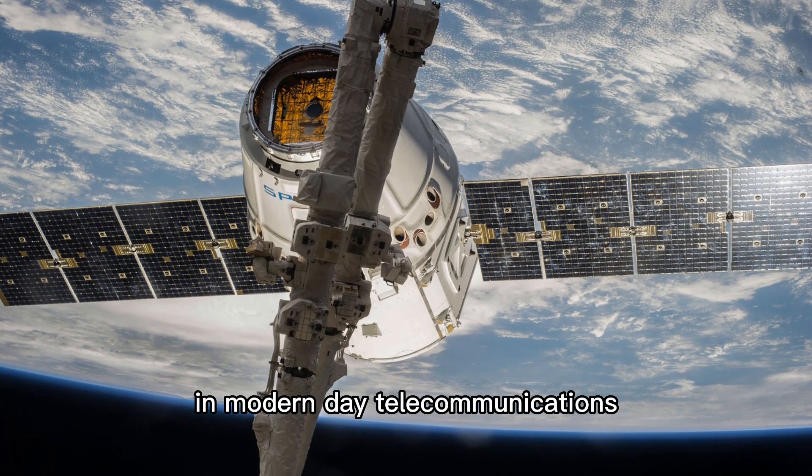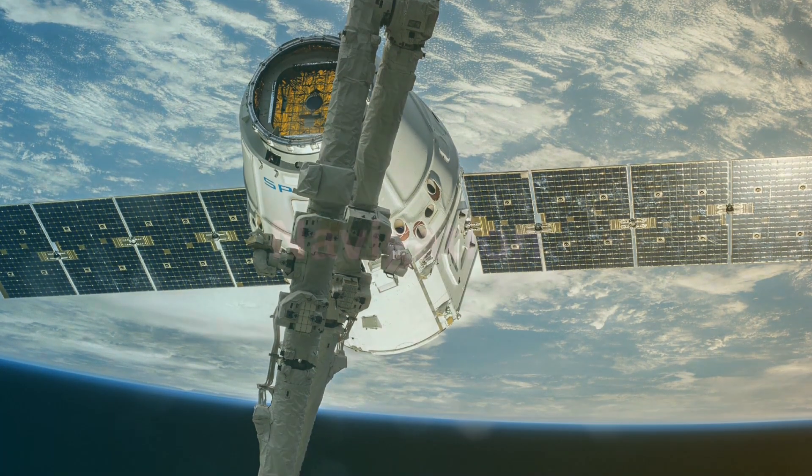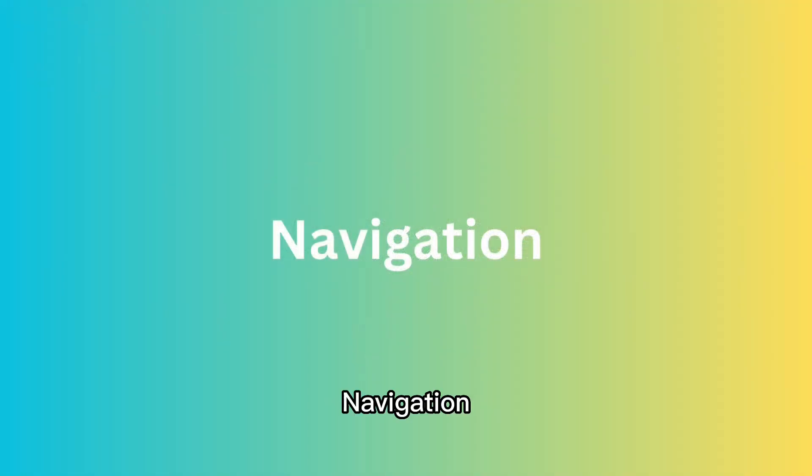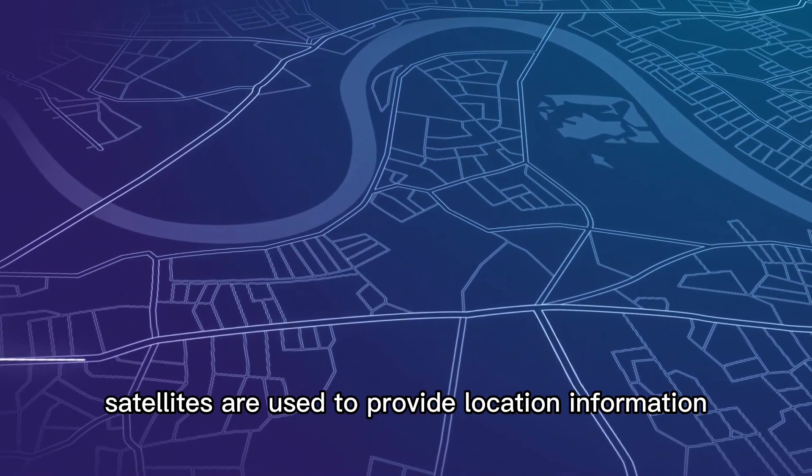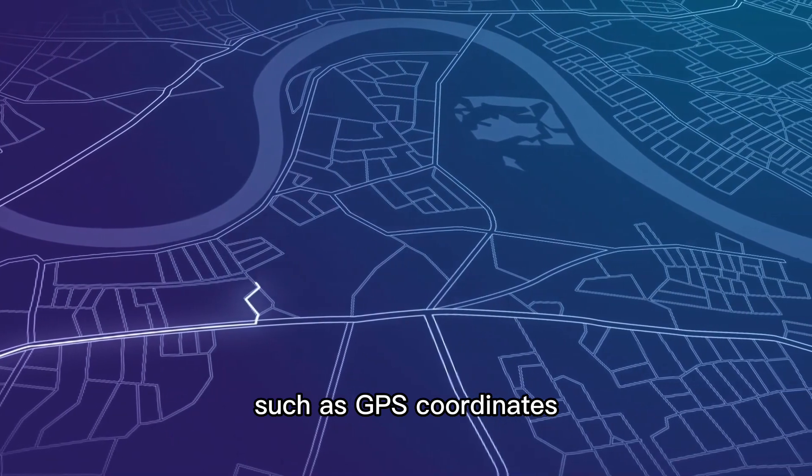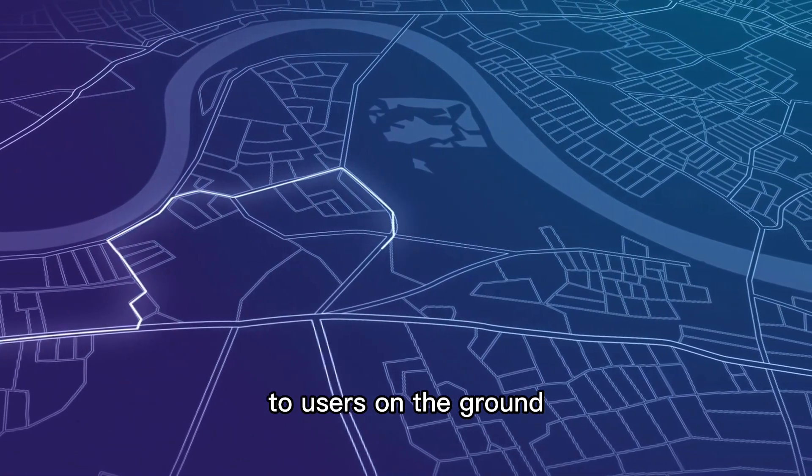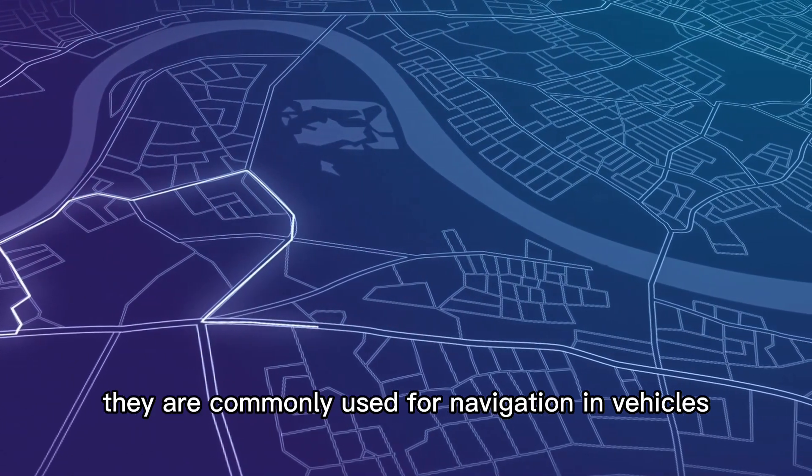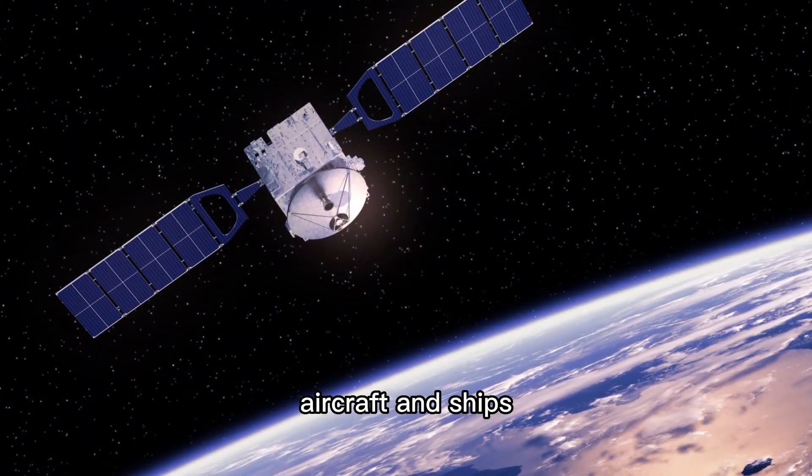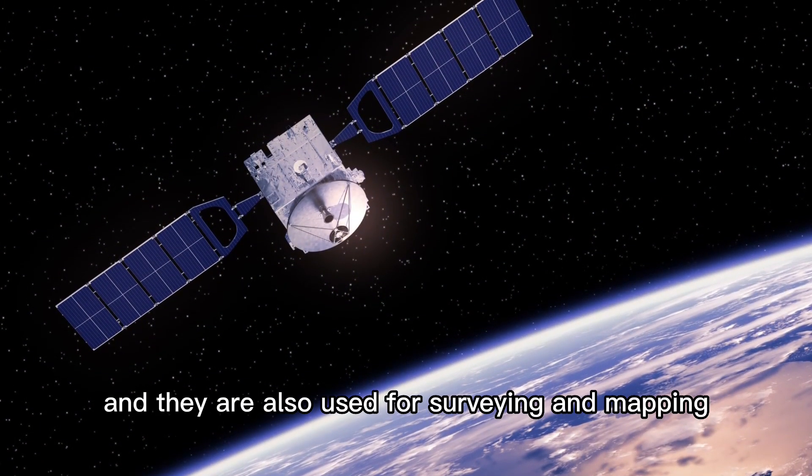Navigation satellites are used to provide location information, such as GPS coordinates, to users on the ground. They are commonly used for navigation in vehicles, aircraft, and ships, and they are also used for surveying and mapping.